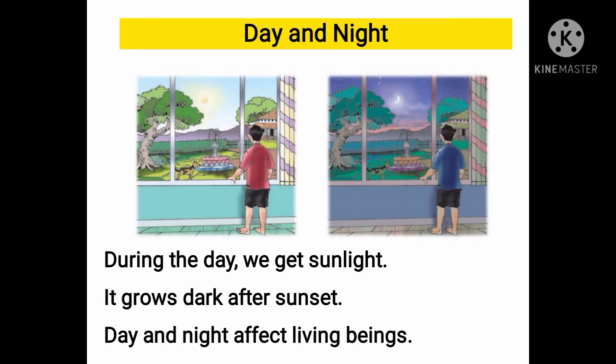Day and Night: The day begins after the sunrise. During the day we get sunlight, that is why we can see the things around us properly. It grows dark after sunset; there is not enough light. We see the stars in the sky at night, but we don't see the things around us clearly. Day and night affect living beings.